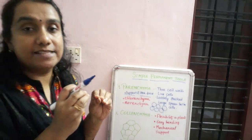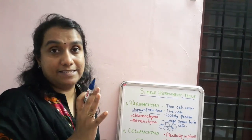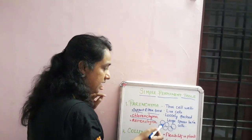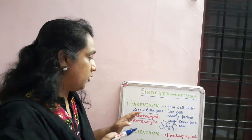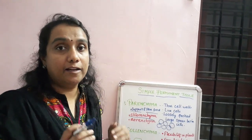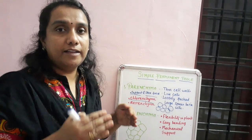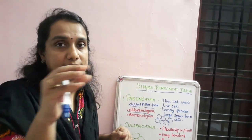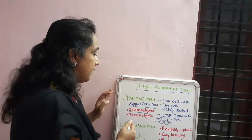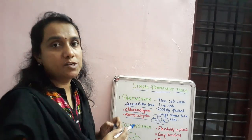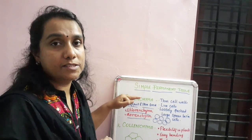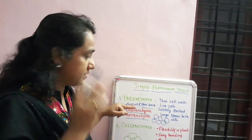Sometimes we can see chloroplasts inside parenchyma cells — that is known as chlorenchyma. Inside the cell we can see chloroplasts. Also, in water plants like lotus, the plants float on water because inside the cells there are air-filled spaces. That type of cell is known as aerenchyma. Air-containing parenchyma is known as aerenchyma, and it helps the plants to float on water. Chlorophyll-containing parenchyma is known as chlorenchyma.